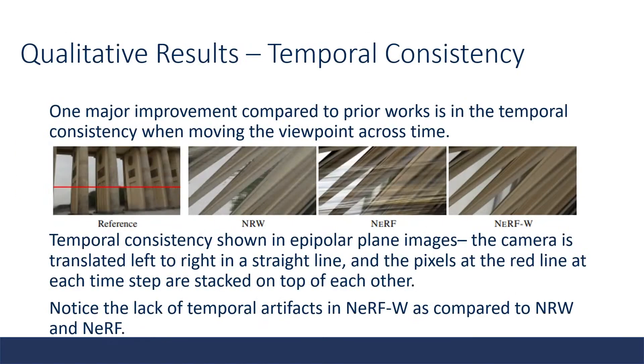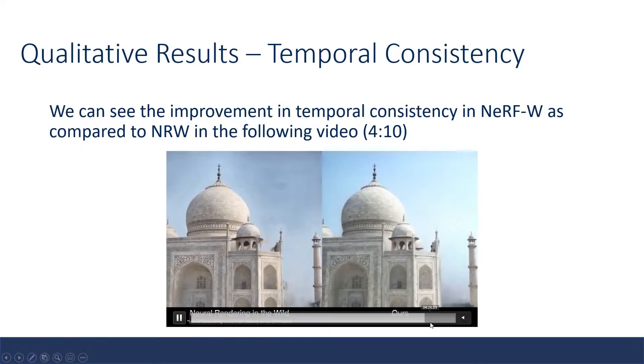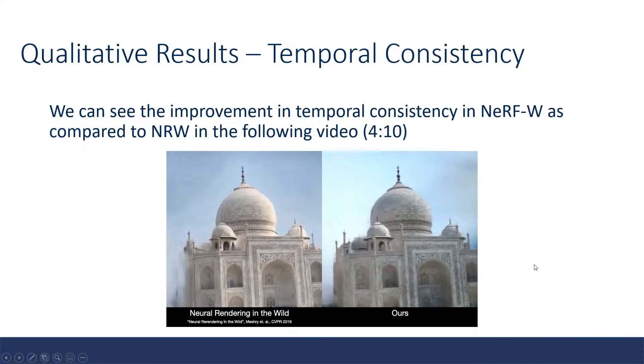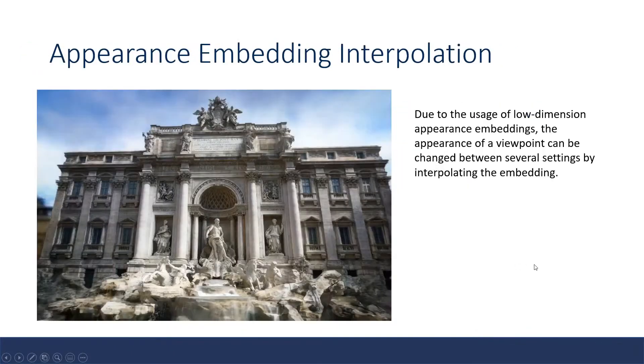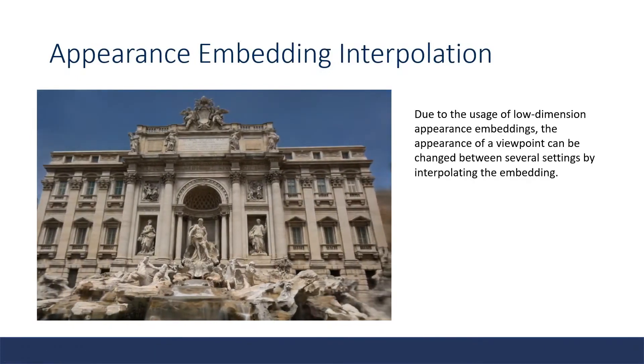In addition to this, NeRF-W also shows major improvements in temporal consistency as seen across these epipolar plane images, which are images taken by a camera translated left to right with pixels all at the red lines stacked on top of each other. We can see that NeRF-W is lacking in temporal artifacts as compared to NRW and NeRF. Here we can see another example of temporal consistency. Notice that NRW has much worse temporal consistency. In addition, NeRF-W is also capable of interpolating between appearances by changing the embedding.